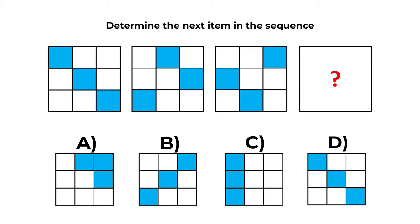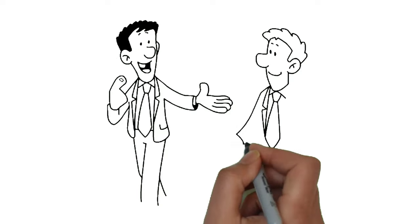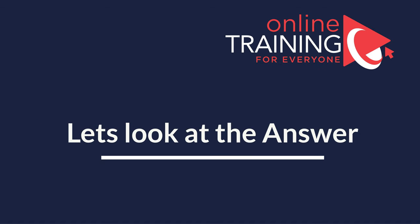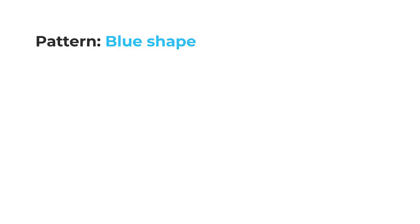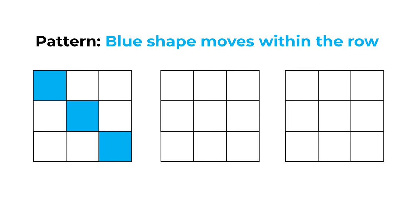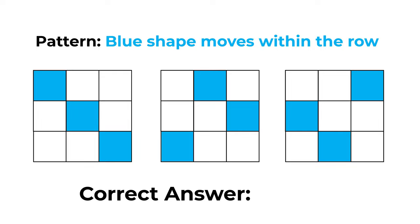Do you see the answer? Give yourself 10 to 30 seconds to see if you can come up with the solution. As always, look for patterns. The key pattern is that the blue shape moves within the row of the larger shape. In each row, the blue shape moves from left to right, one step at a time. And once the blue shape reaches the end of the row on the right, it reappears on the left. So the correct answer here is choice D.